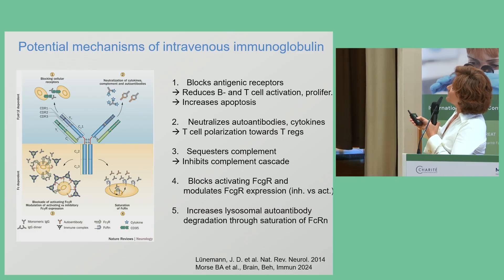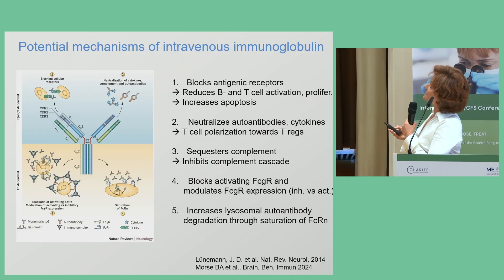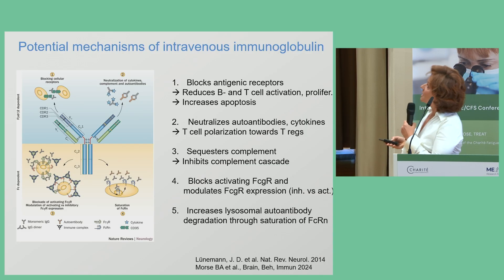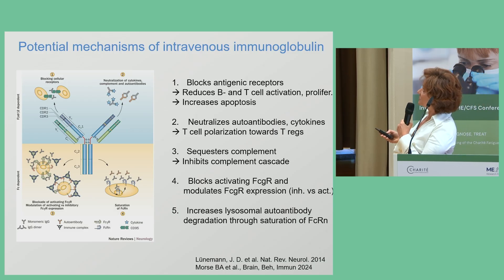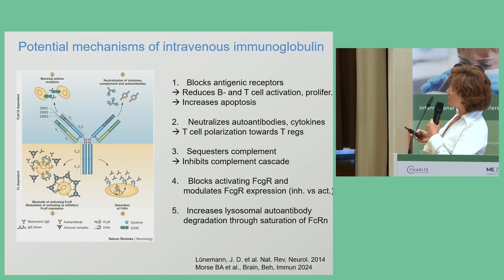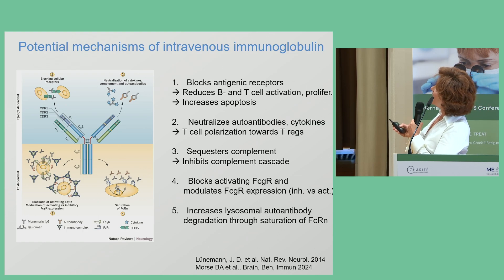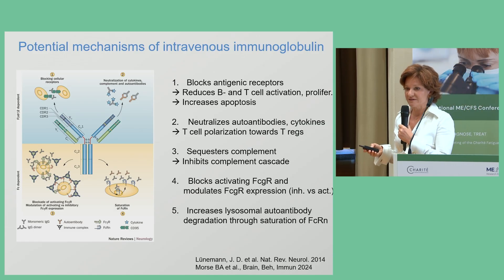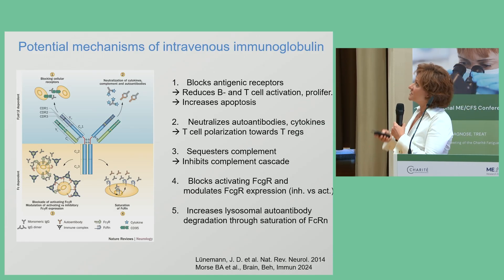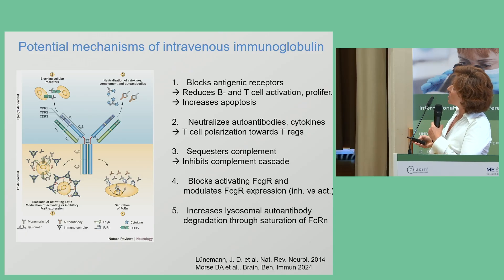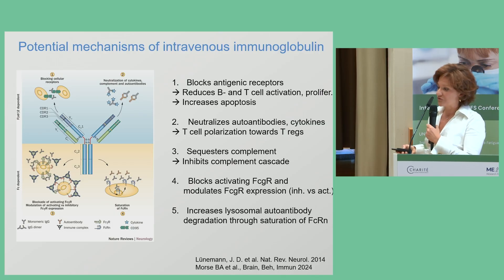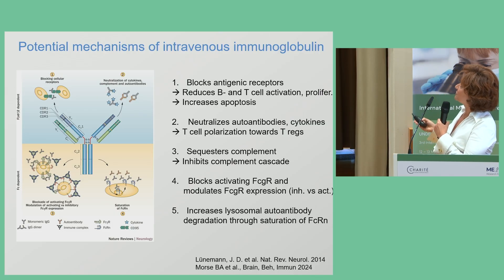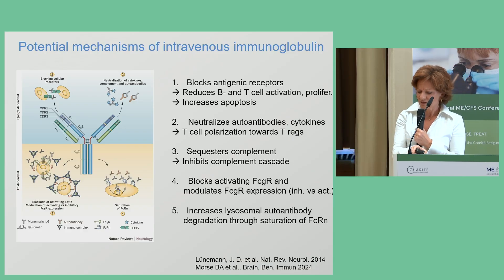IgG can also sequester complement, which is important in various processes, and inhibit complement cascades. It is known to interact with Fc receptors — blocking activating receptors of innate immune cells and expressing inhibitory receptors in these cells — thereby decreasing the immune response. Finally, it can also increase lysosomal autoantibody degradation due to saturation of the neonatal Fc receptor in these cells.